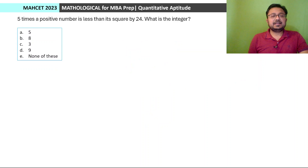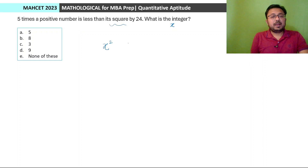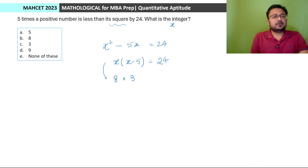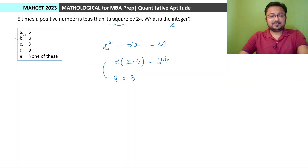Next: Five times the positive number is less than its square by 24. What is the integer? Let the integer be x. x² − 5x = 24, so x(x−5) = 24. We need two numbers with a difference of 5 whose product is 24: 8 and 3 work. So x = 8. Option T.